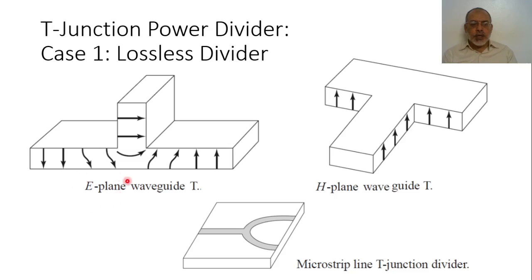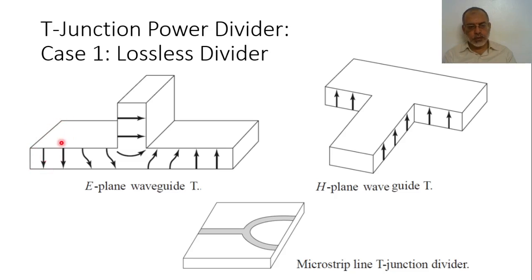The E-plane waveguide T divider, if the waveguide sections have the same widths, will have equal amplitude at the output, but the output will be out of phase. Assuming the phase at one port is zero degrees, the phase at the other port would be 180 degrees. This is the main property of the E-plane waveguide T.